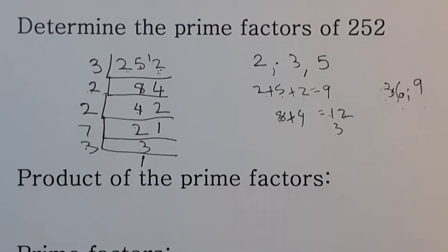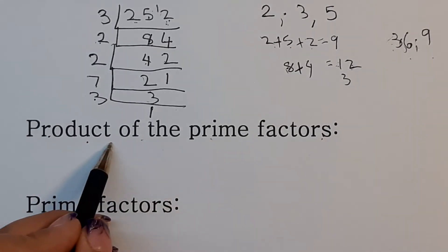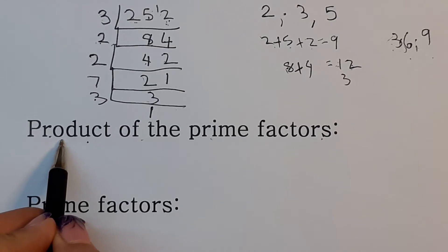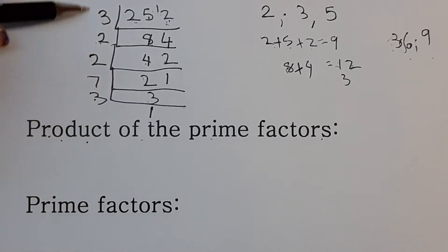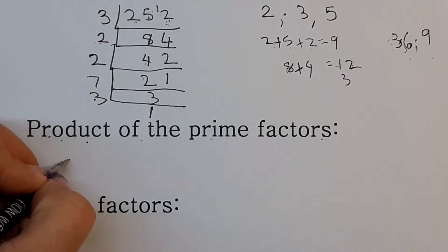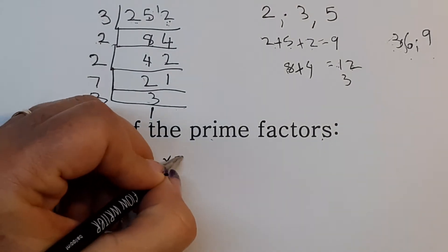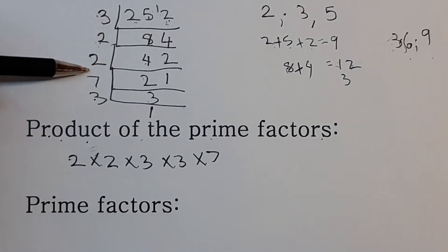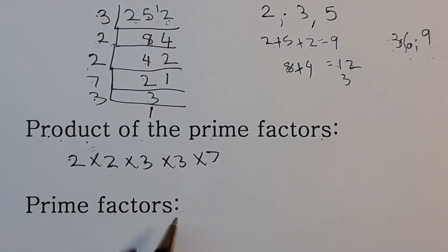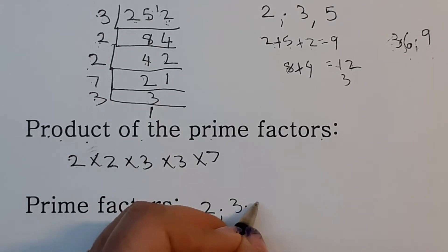They can ask you in two different ways. One is: what is the product of the prime factors? Remember, product is the answer of a multiplication sum. Arrange all the prime factors you found in ascending order: two times two times three times three times seven. Check that you haven't left any out. When they ask for the prime factors, you just take one of each — so it's two, three, and seven.